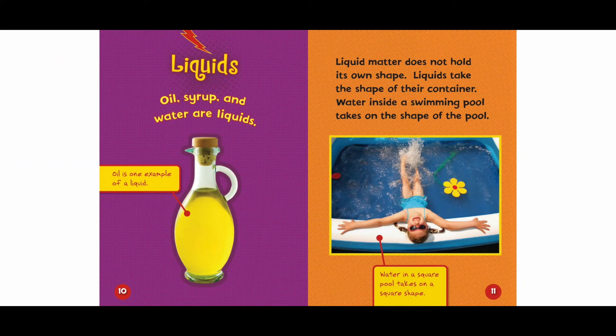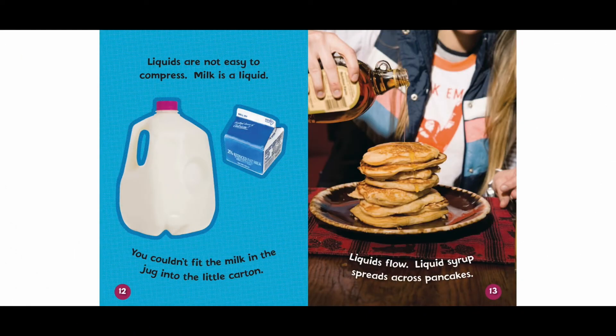Liquids. Oil, syrup, and water are liquids. Oil is one example of a liquid. Liquid matter does not hold its own shape. Liquids take the shape of their container. Water inside a swimming pool takes on the shape of the pool. Water in a square pool takes on a square shape. Liquids are not easy to compress. Milk is a liquid — you couldn't fit the milk in the jug into the little carton.